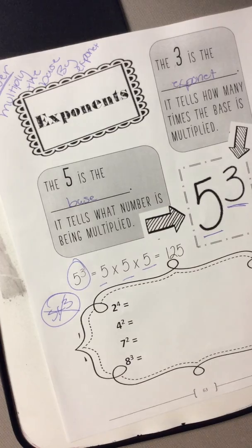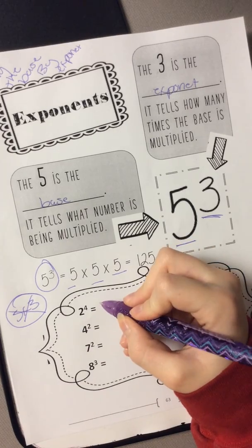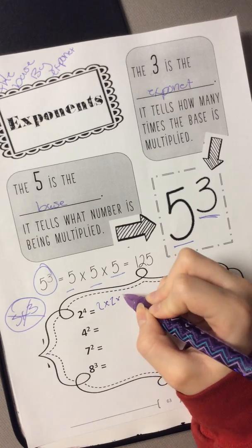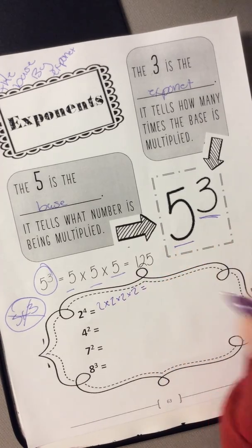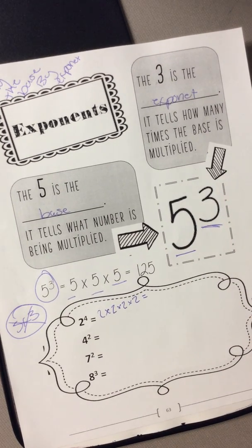So on our notes page we got 4 problems to do. The first one is 2 as your base and 4 as your exponents. You should write it out as 2 times 2 times 2 times 2. I'll give you a second to think about the answer.